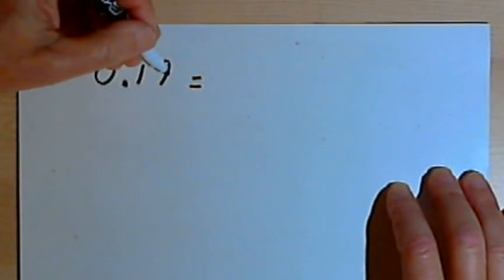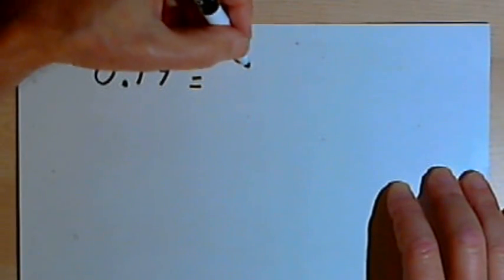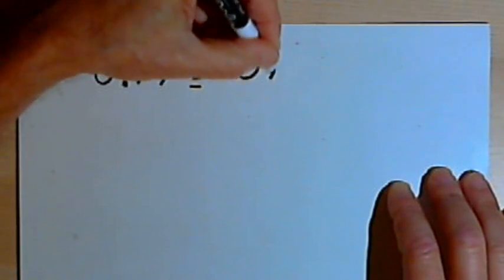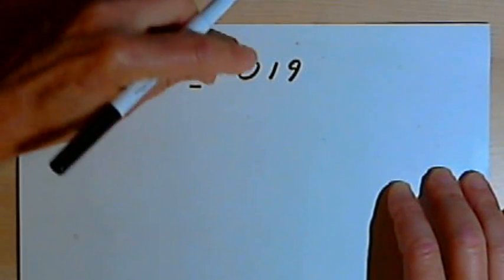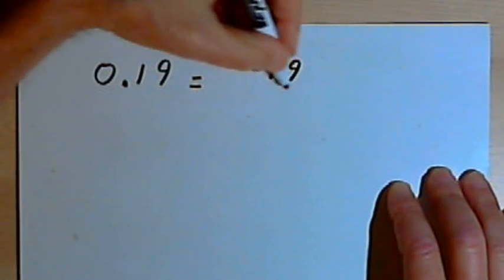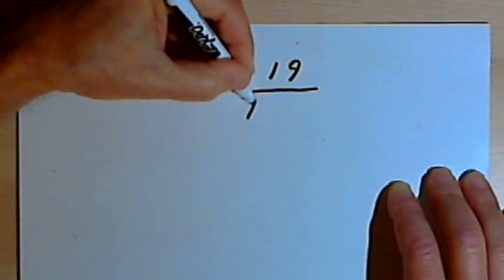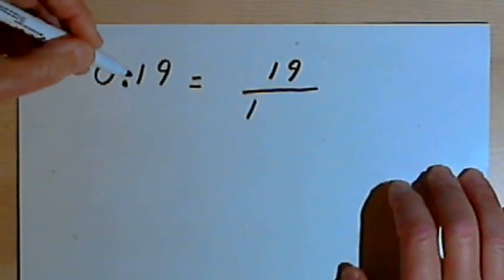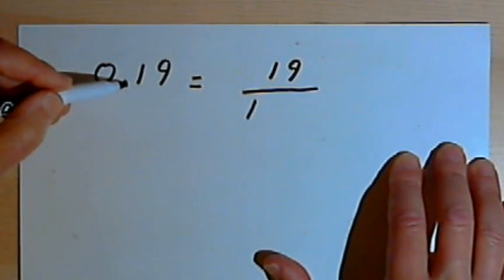I'm going to take the number and rewrite it without the decimal point. So if I just leave off the decimal point, that would be 019. This leading 0 doesn't do anything, so I can get rid of that. That's going to be the numerator for my fraction. For the denominator, I'm going to write a 1.